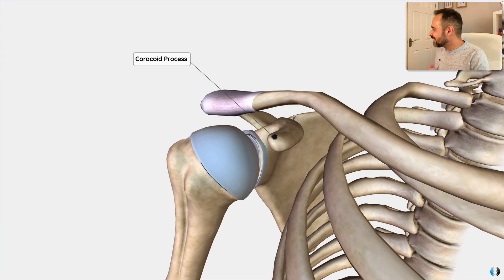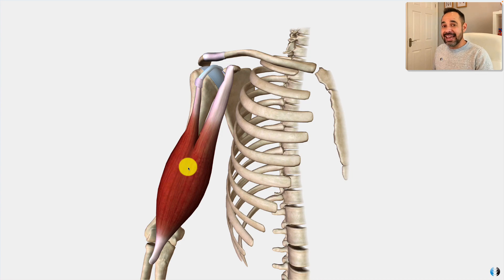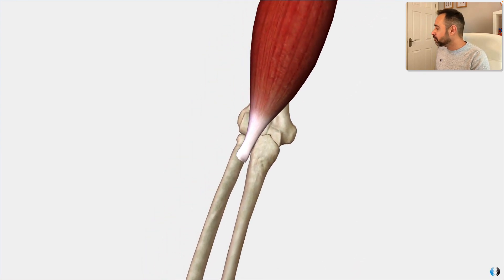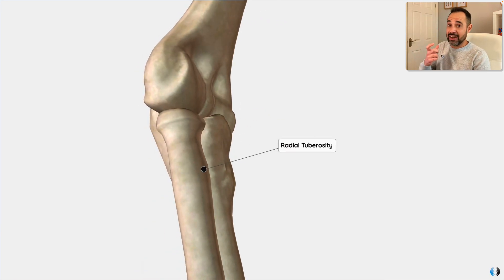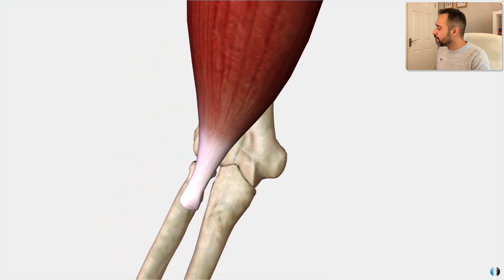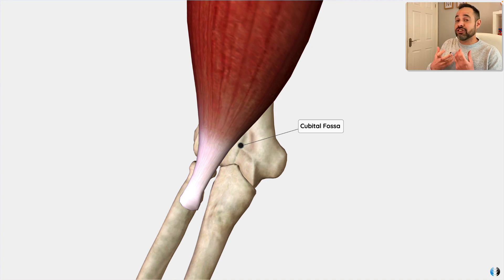Now let's move on to the distal insertion. The long head and the short head effectively join together to create the biceps muscle belly, and then they converge into a central tendon distally. This inserts into the radial tuberosity of the radius, which is a little prominence on the anterior surface of the radius, similar to the supraglenoid tubercle. We know that the distal biceps tendon runs over the cubital fossa, which is this little anterior crease that we can see at the front of the elbow, and it's a really good place to palpate this tendon.